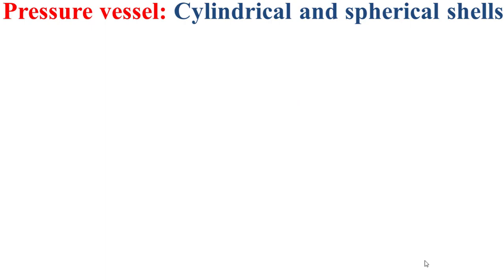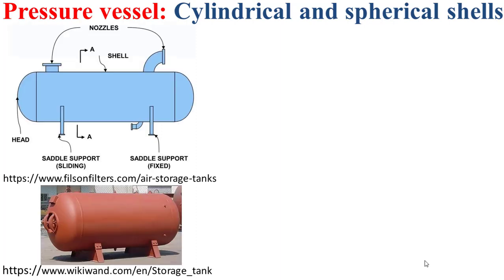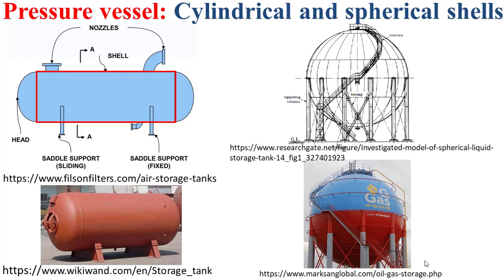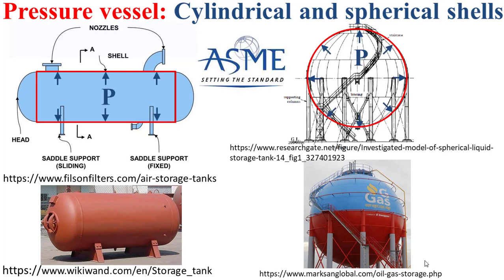First of all, it should be remembered that in industrial applications we have cylindrical pressure vessels, as depicted by this schematic diagram and this real picture. This cylindrical pressure vessel is characterized by its cylindrical main shell, as highlighted in red. We also have spherical pressure vessels, as depicted by the schematic diagram on the right and the real picture at the bottom right. This spherical pressure vessel is characterized by its spherical main shell, as highlighted in red. In this educational video we will explain how to size the thickness of the cylindrical and spherical main shells when the pressure vessel is subjected to internal pressure.